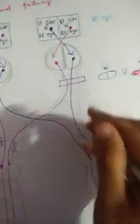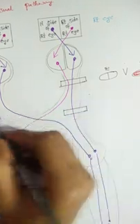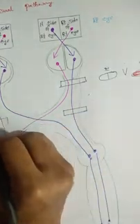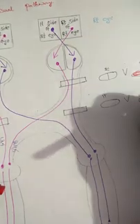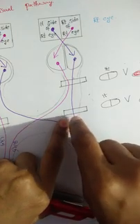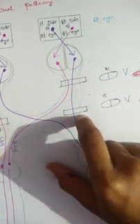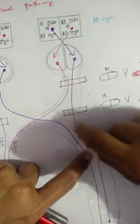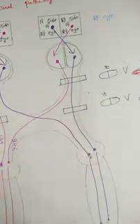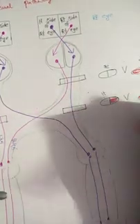The lateral part of the optic chiasma lesion causes nasal field lesion of the right eye — binasal hemianopia. Running along the blue line and the pink line, you can see the nasal side lesion causes binasal hemianopia.